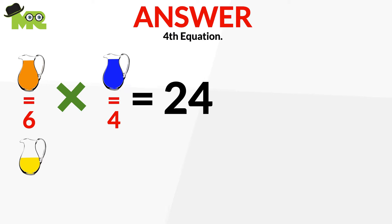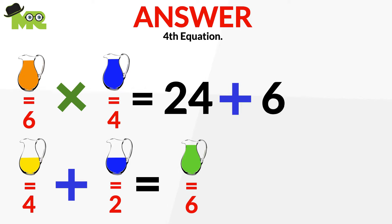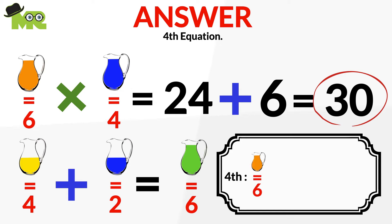Now mix half a jug of yellow juice, which is equal to 4, with the half jug of blue juice, which is equal to 2, which makes the total value equal to 6. Now add 6 to 24, which gives us 30. Therefore, the answer is 30. 6 times 4 plus 6 equals 30.